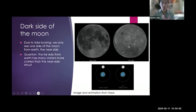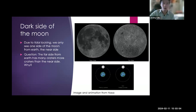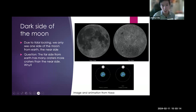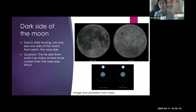So one side we see from earth doesn't have many craters, and the other side has a lot of craters. I'll pose this to the audience: why are there more craters on the side that we don't see? Any comments — you're welcome to shout it out, unmute, or type in chat.